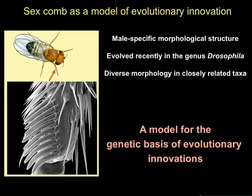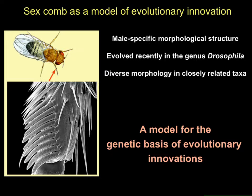One of our main models is the sex comb. Both Pierre and Pam showed sex combs in introductory slides, making this the third talk about sex combs in a row. The sex comb is a group of modified mechanosensory bristles on the front legs of males — essentially a grasping implement that males use during courtship and mating. Importantly, the vast majority of Drosophila species do not have them. It is a fairly recent evolutionary innovation that appeared within the genus Drosophila, apparently out of nothing.